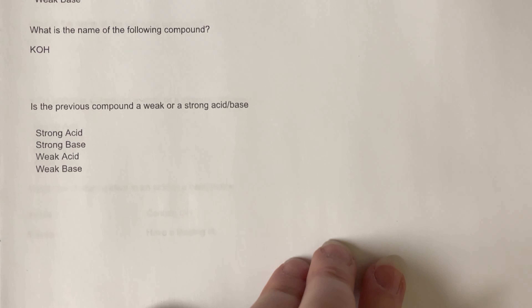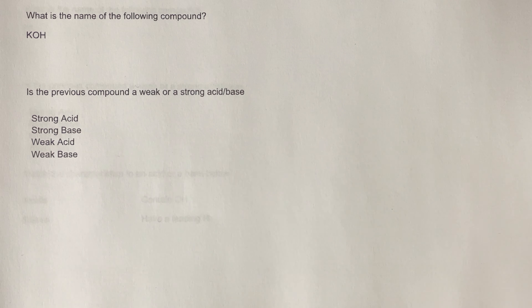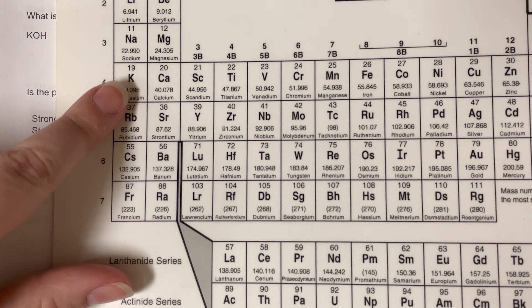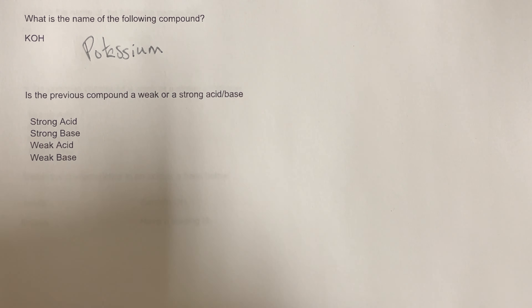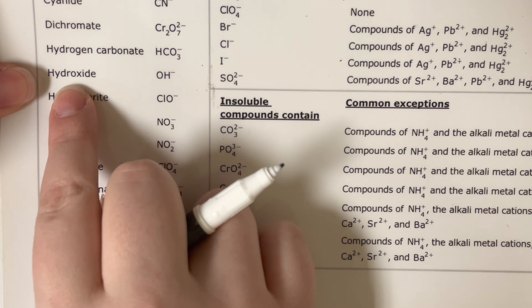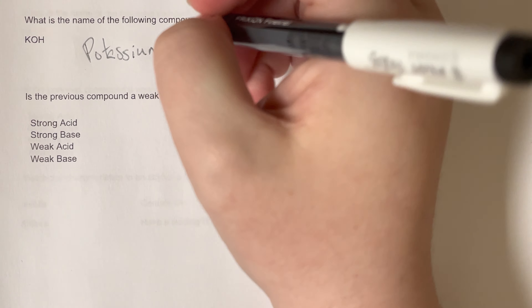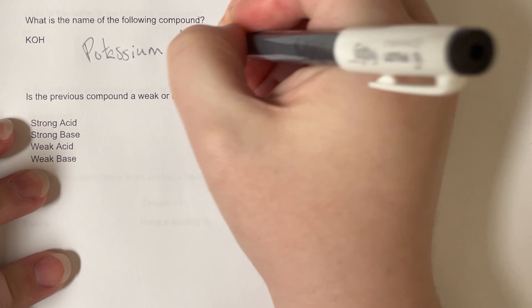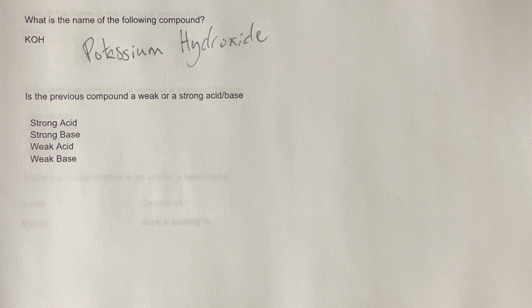What is the name of the following compound KOH? KOH is going to be an ionic compound. K is potassium — it is in the first two columns, so I don't need to calculate an oxidative state. Then OH is a polyatomic ion, and for polyatomics I just need the polyatomic ion's name. OH on my list is hydroxide, so this is potassium hydroxide.